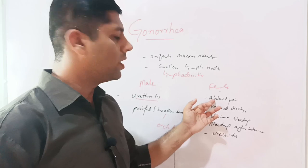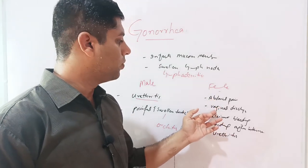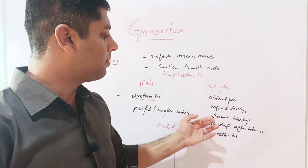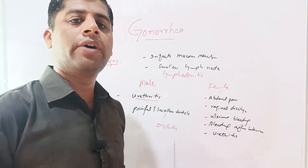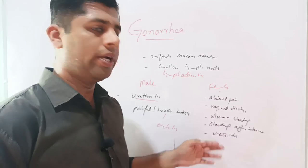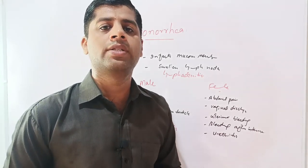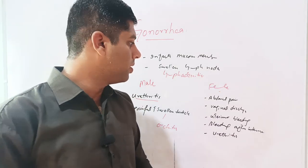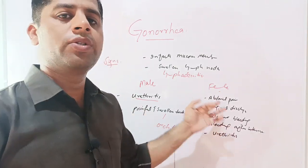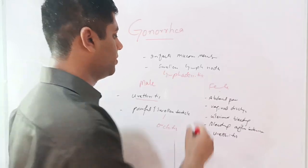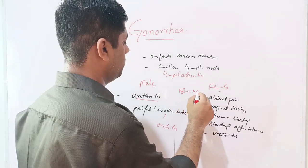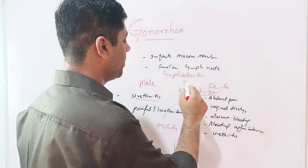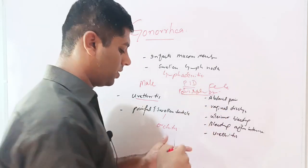In females, there is abdominal pain, vaginal discharge or pus discharged from the vagina, and abnormal uterine bleeding or bleeding after intercourse. Urethritis is also seen in females, with pus released from the urethra and painful urination. The abdominal pain in females is due to pelvic inflammatory disease, which Neisseria gonorrhea causes — referred to as PID — and will be discussed in the complications.